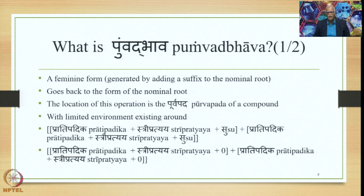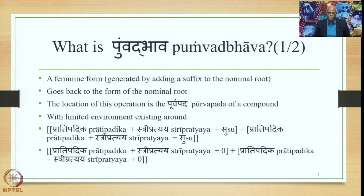Another important condition is that the Pratipadhika in the Uttarapada should not contain a Purana Pratyaya. And the Pratipadhika plus Stripratyaya should not be part of the list that begins with Priya, etc. When all these conditions are fulfilled, we apply the Pumbadbhava technique — first the Samasa Saudhnya, then the Pratipadhika Saudhnya, and applying Supodhatup Pratipadhika Yoho to generate the output: Pratipadhika plus Stripratyaya plus zero, plus Pratipadhika plus Stripratyaya plus zero.